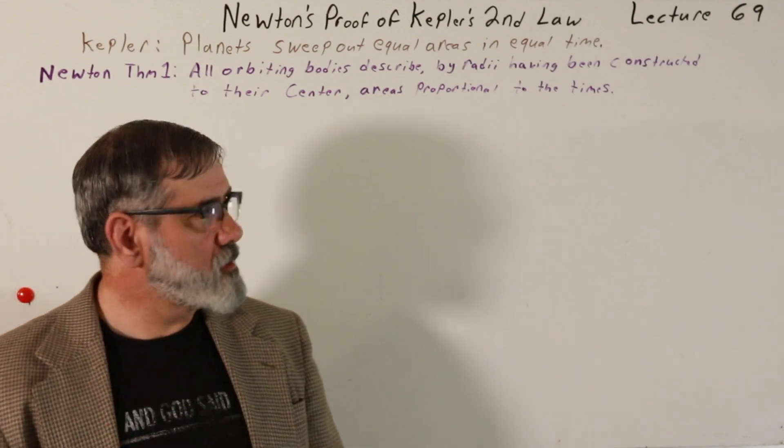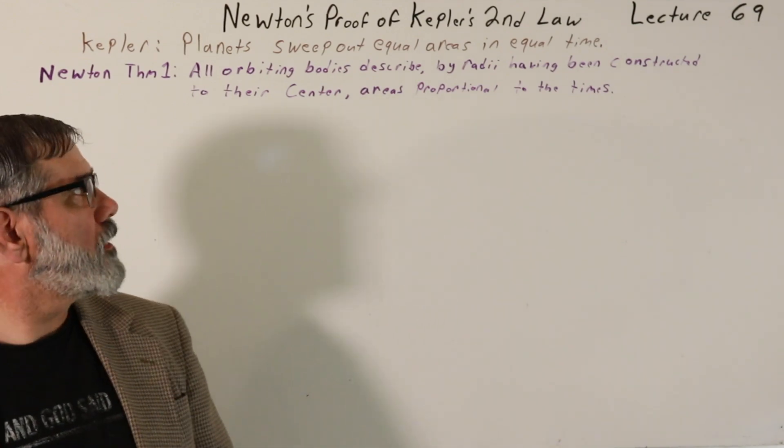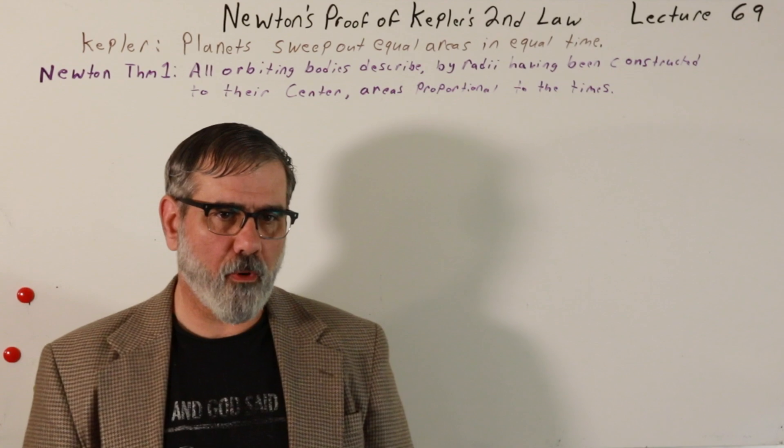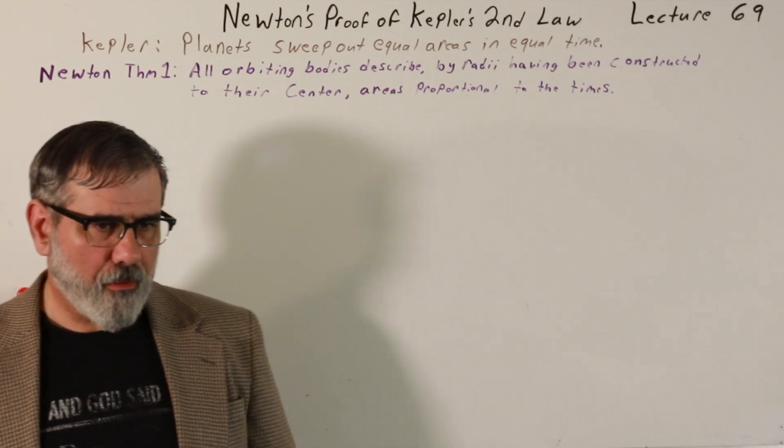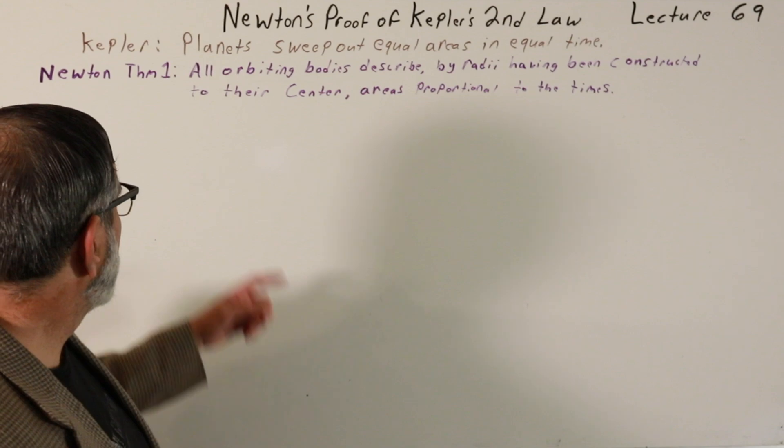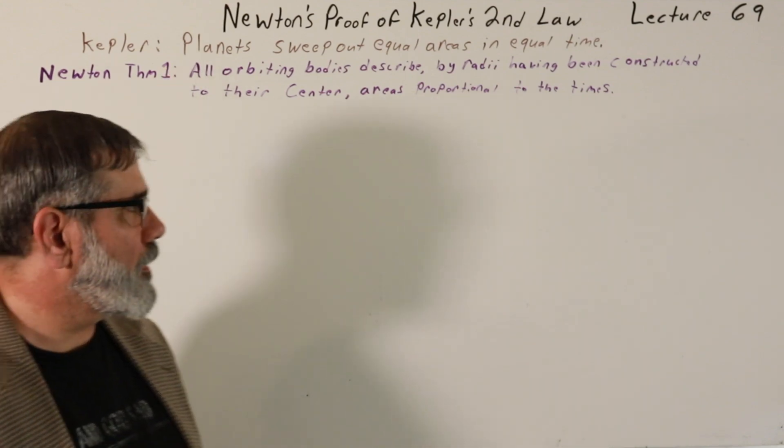Okay, this brings us to Lecture 69, Newton's Proof of Kepler's Second Law. So we're going to look at the way that Newton did it. Last time we looked at a modern treatment of Kepler's Second Law. Kepler's Second Law basically says planets sweep out equal areas in equal time.